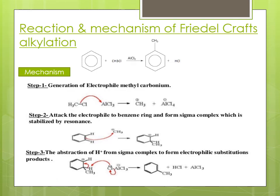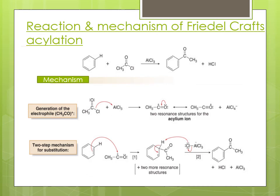Reaction and mechanism of Friedel-Craft acylation: benzene reacts with an acid chloride to form acetophenone. In this reaction, acid chloride reacts with aluminium chloride as catalyst. Electrons on the chlorine are donated to the aluminium of aluminium chloride to form the electrophile — the acylium ion. In the second step it attacks on the benzene ring, and the proton is removed in the last step to form acetophenone.